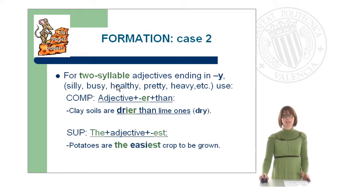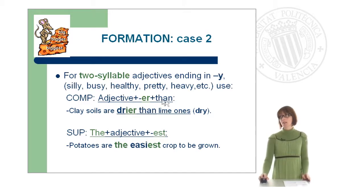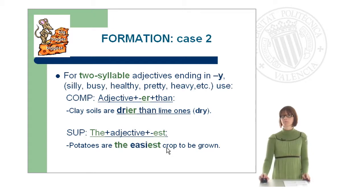For two-syllable adjectives ending in -y — for example, silly, busy, healthy, pretty, heavy — we use the adjective plus -er plus 'than' for the comparative. For example: 'Clay soils are drier than lime ones.' For the superlative, we use 'the' plus the adjective plus -est. For example: 'Potatoes are the easiest crop to be grown.'